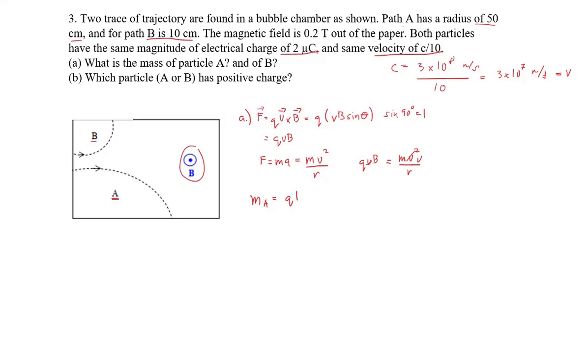That's just going to be QBR over velocity. Which is 2 times 10 to the negative 6 Coulombs times 0.2 Teslas times the radius. Now let's be careful. Radius is given in centimeters here. We need it in meters. So 50 centimeters is just 0.5 meters. All of it divided by 3 times 10 to the 7 meters per second. And we get a result of 6.7 times 10 to the negative 15 kilograms.